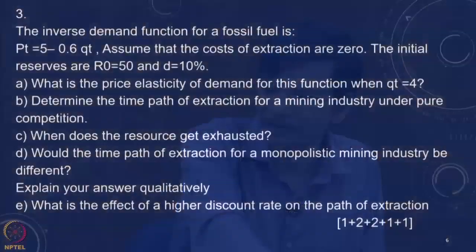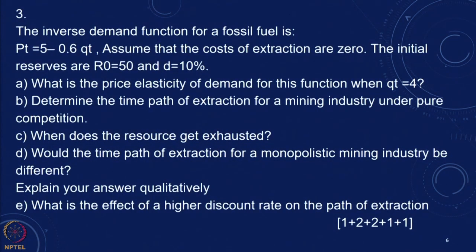Now let us look at the third question. This question involves the inverse demand curve which we have solved earlier. The inverse demand curve for a fossil fuel is given as Pt = 5 minus 0.6 Qt. Assume that the costs of extraction are 0, initial reserves R0 is 50, and D is 10 percent. What is the price elasticity of the demand for this function when Qt is equal to 4?